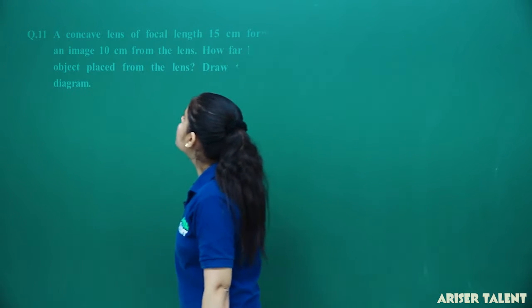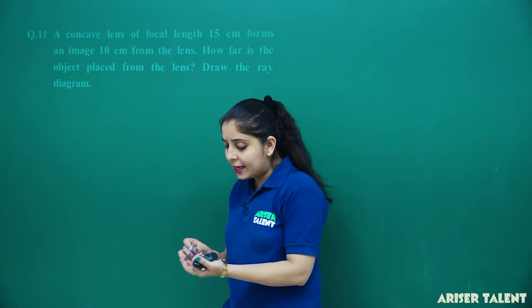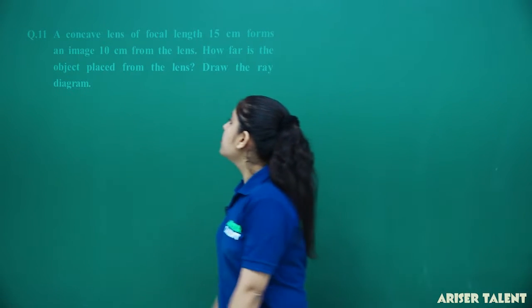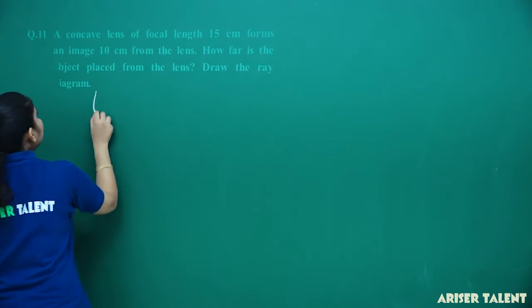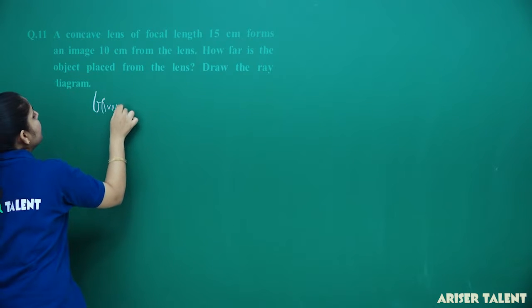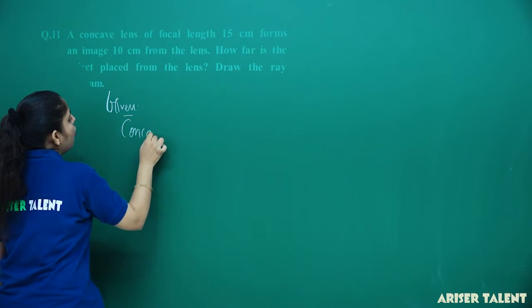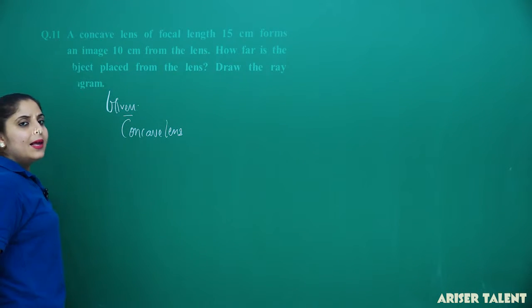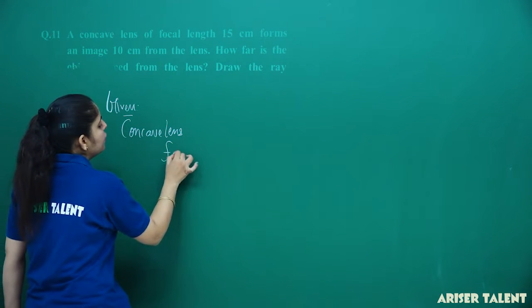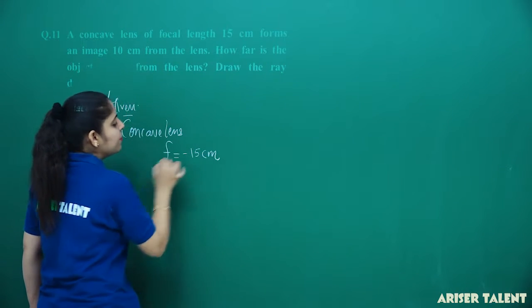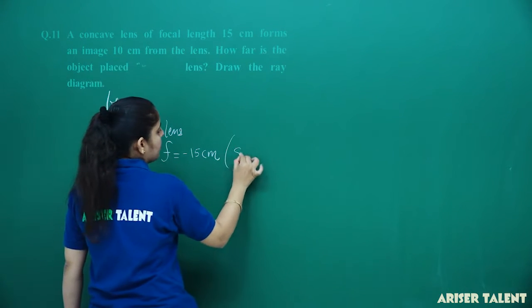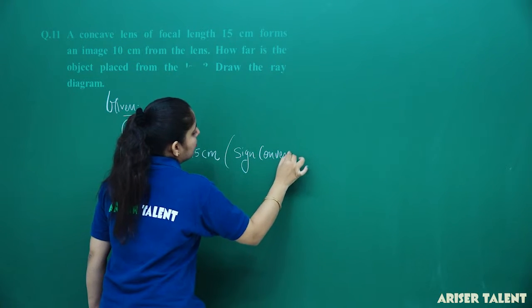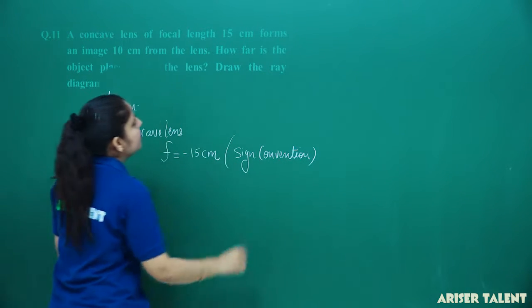This is our 11th question. A concave lens of focal length 15 centimeter is given. According to the sign convention, the focal length will be minus 15 centimeter.